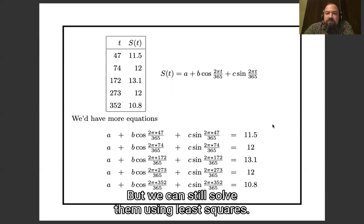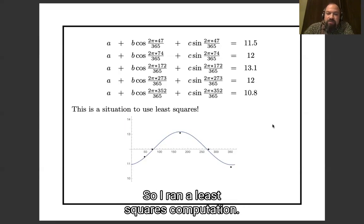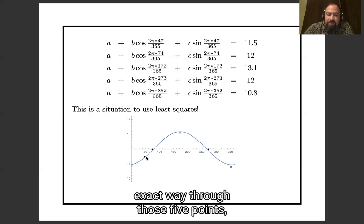And those five linear equations in three variables do not have an exact solution, but we could still solve them using least squares. So I ran a least squares computation, and here is the resulting sine curve. As you can see, it is not exactly through those five points, but it's a good fit to all of them.